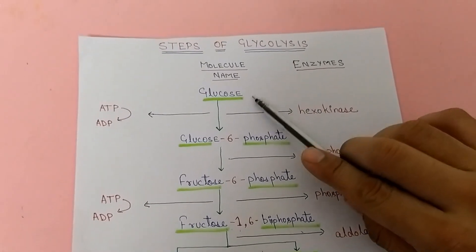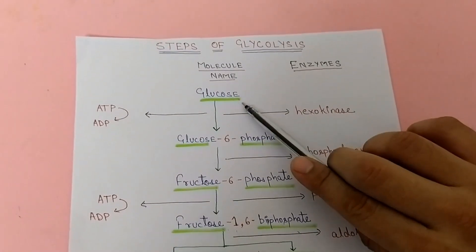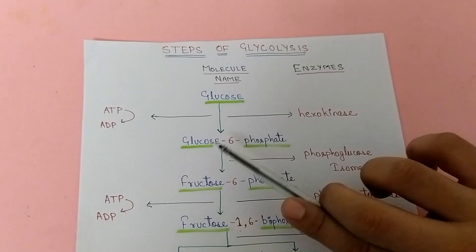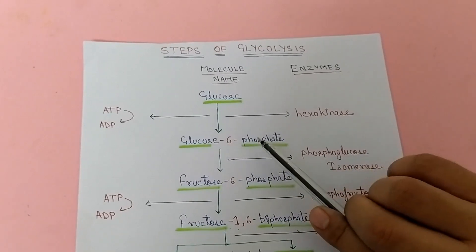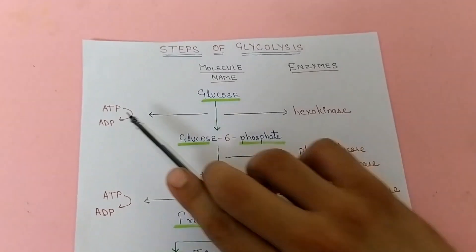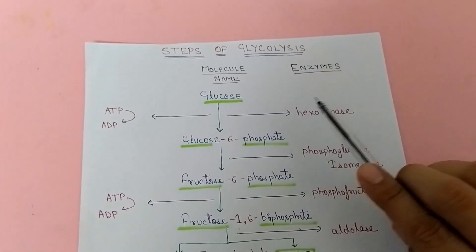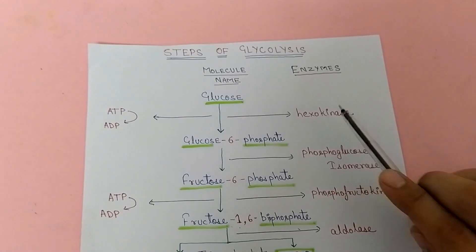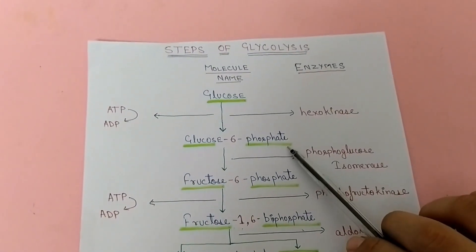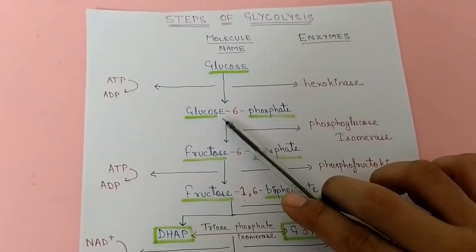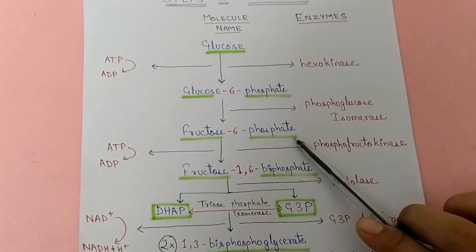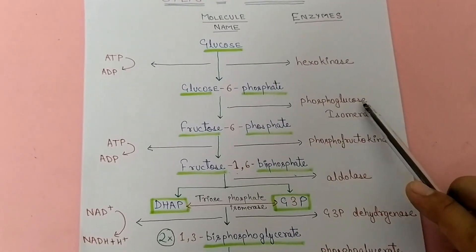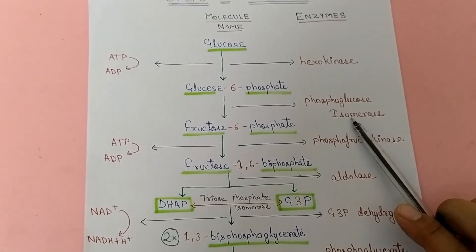The reaction starts with glucose, a 6-carbon compound. We convert glucose into glucose-6-phosphate with the expenditure of a single ATP and with the help of enzyme hexokinase. Then we isomerize glucose-6-phosphate into fructose-6-phosphate with the help of enzyme phosphoglucose isomerase.